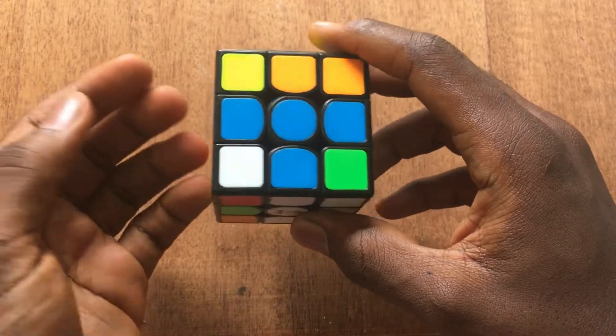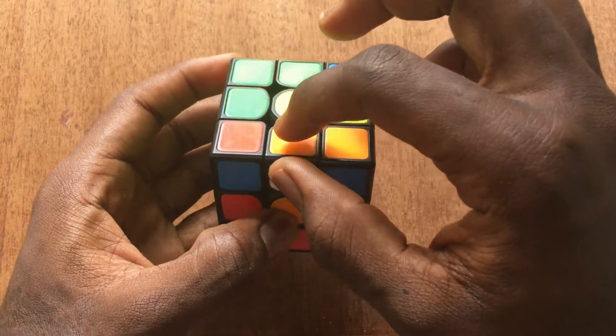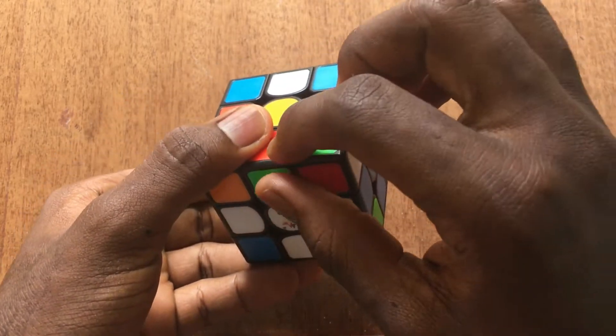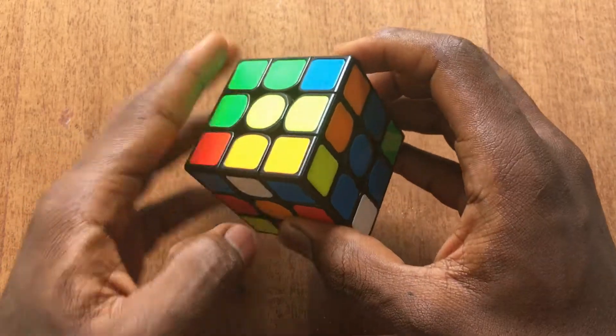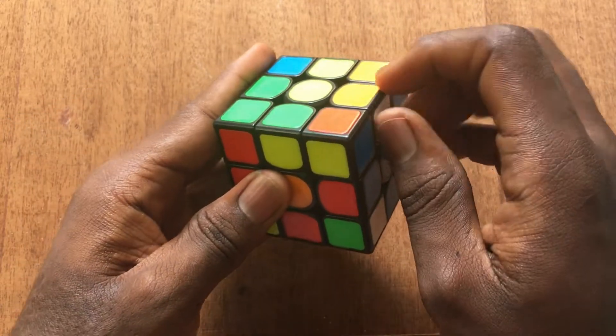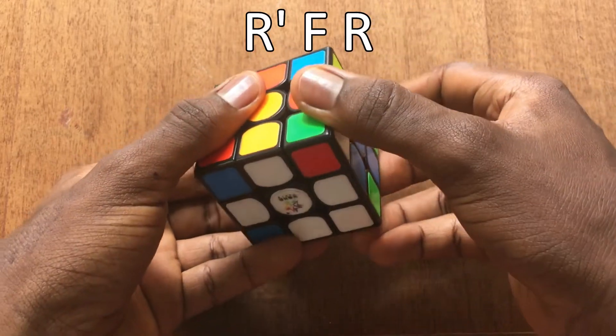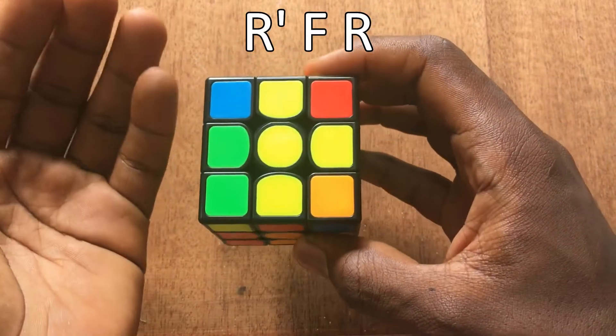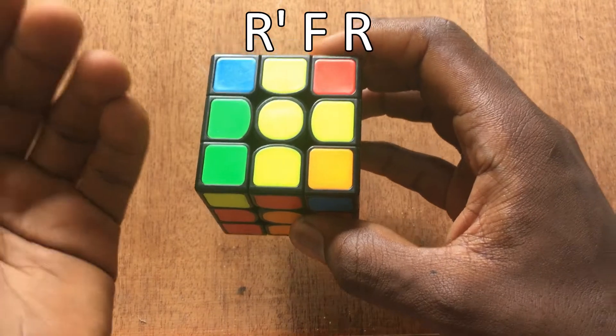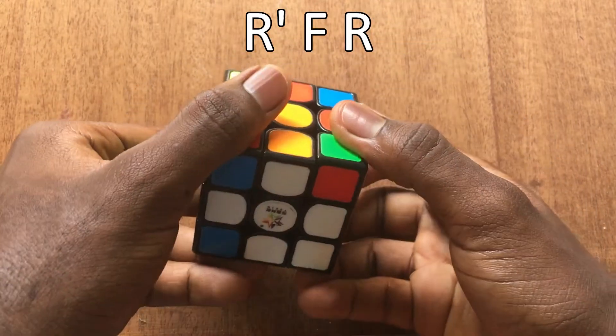Sometimes you can run into a situation when all your cross edges are solved and you have one bad edge left to be inserted into its place. So what we can do here is to move the bad edge over to this side and then do this algorithm: r' f r. So these three moves are not really much because they are very very fast.